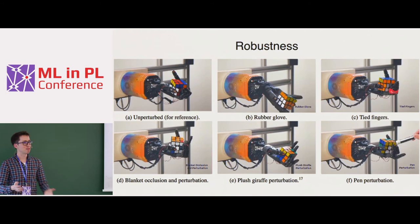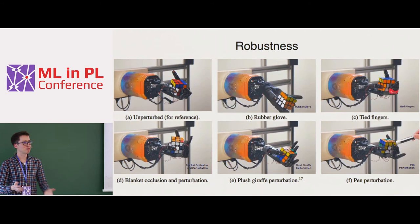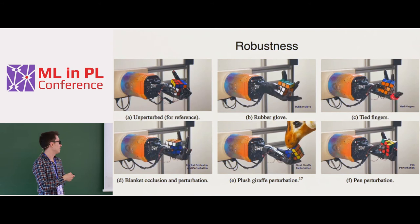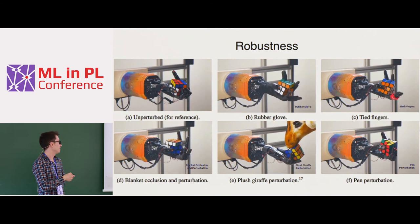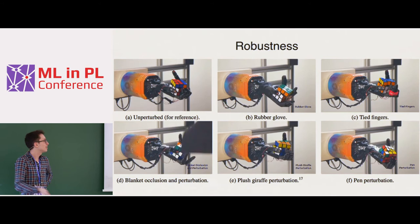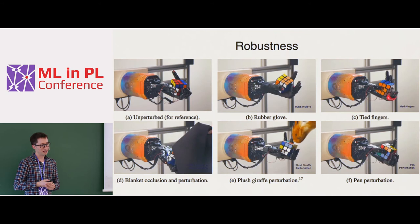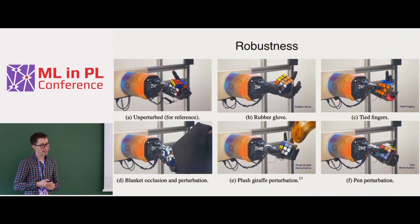To check robustness, we applied a range of perturbations to our environment: we put a rubber glove on the hand, tied two fingers together, occluded the scene with a blanket, or pulled the cube with a plush giraffe or a pen. While we didn't quantify these, the policy is able to perform multiple face rotations under all of these conditions.